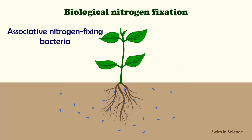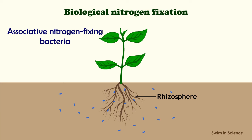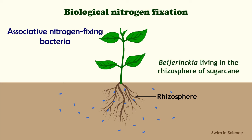In associative symbiosis, bacteria live in close association with the roots of plants and fix nitrogen. The roots provide carbohydrates for the nourishment of bacteria. The bacteria may remain in the rhizosphere or may enter into the roots. For example, Bajernikia living in the rhizosphere of sugarcane.